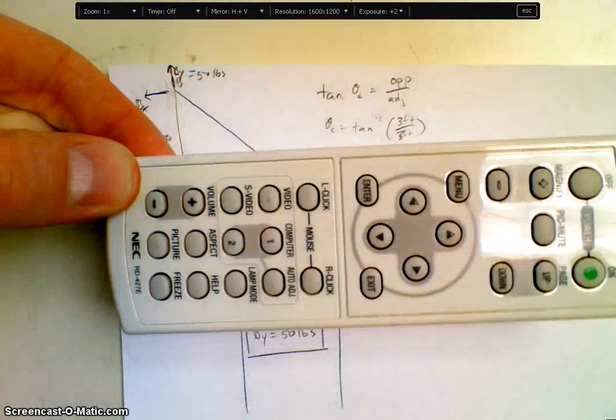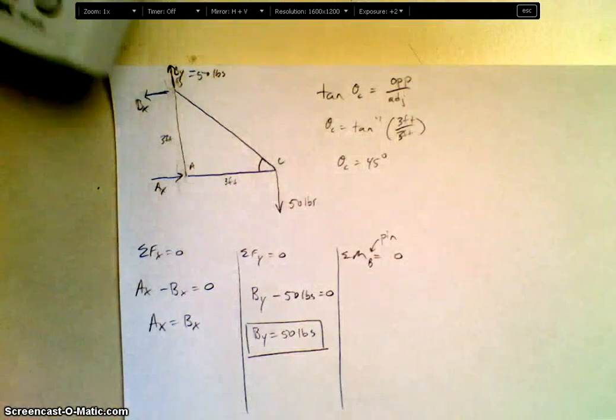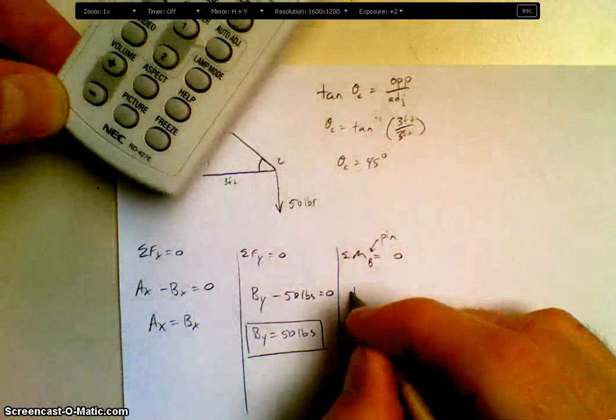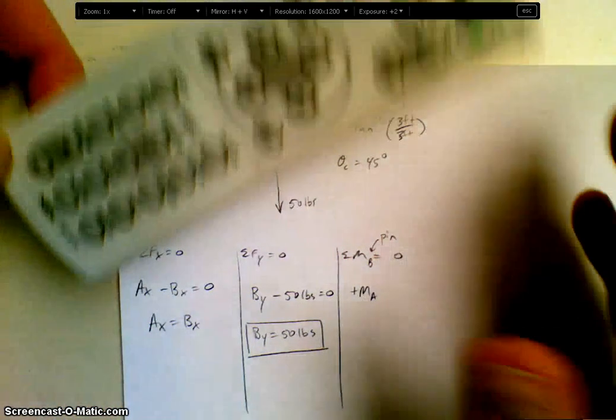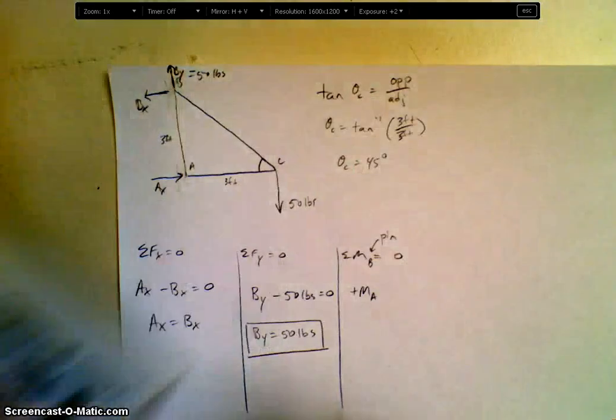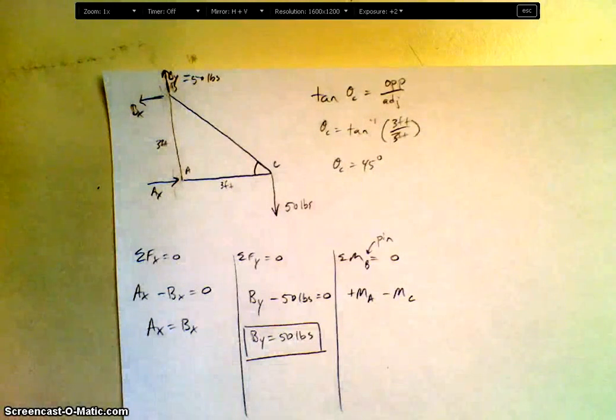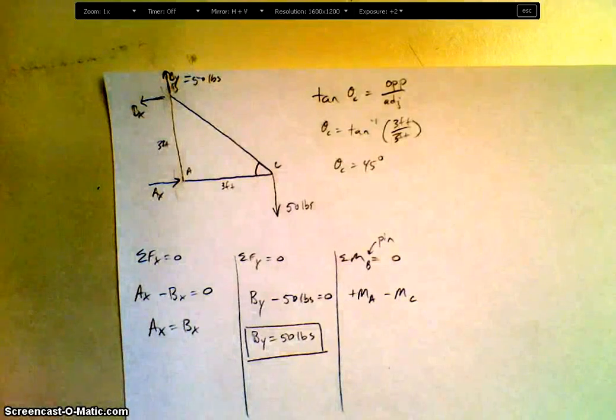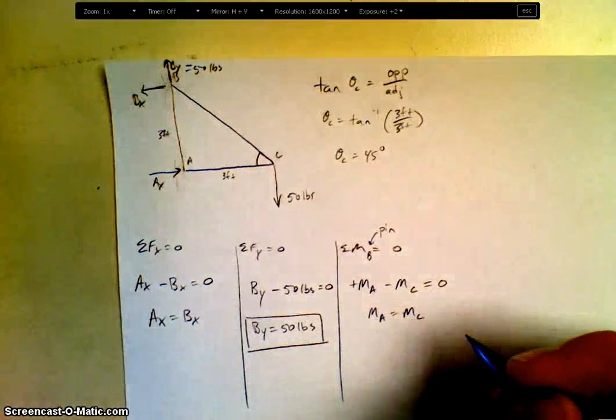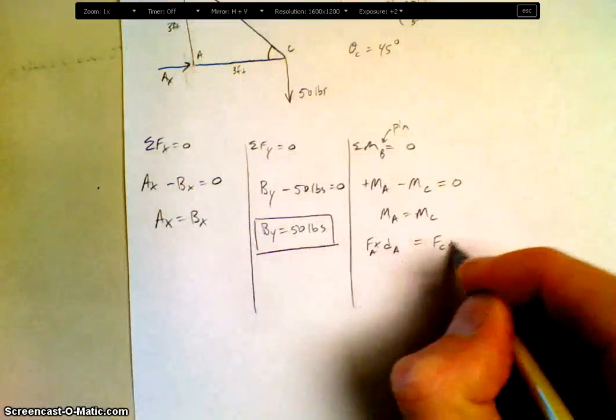So if I hold it at pin B, and I push here, does it cause it to rotate? Yes. So AX causes rotation in which direction? Counterclockwise, which is positive. So I have a positive moment from A. And what if I pull down here? I get a negative moment from C. And those are the only forces that I have that cause rotation. So therefore, the moment of A equals the moment from C. Moments are forces times distance. So the force of A times distance of A equals force of C times distance of C.